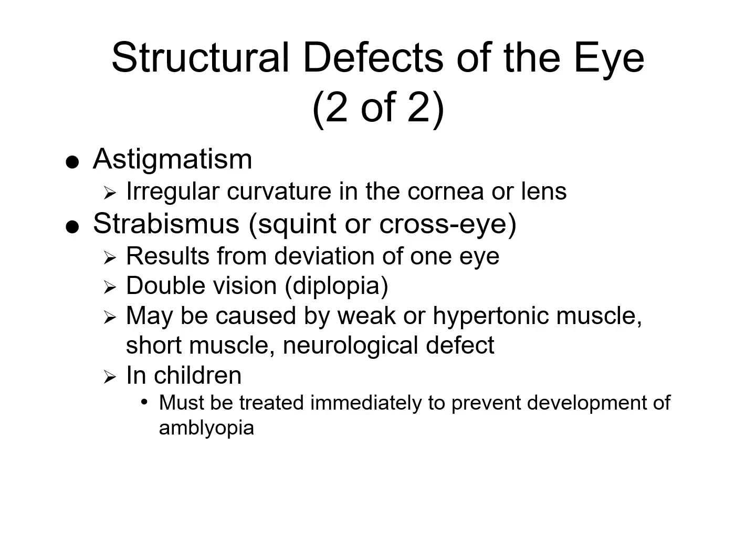Astigmatism results from an irregular curvature in the cornea or lens. Strabismus — squint or cross-eye — can result in double vision, also known as diplopia. Strabismus can be caused by weak or hypertonic muscles, a short muscle, or a neurological deficit. It is a misalignment of the eye in which one eye turns in a different direction from the other. There are six extrinsic muscles that work together to control eye movement; in strabismus, these muscles have problems maintaining a normal eye position.